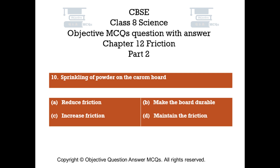Question number 10: Sprinkling of powder on the carom board does what? Option A: Reduce friction. Option B: Make the board durable. Option C: Increase friction. Option D: Maintain the friction.